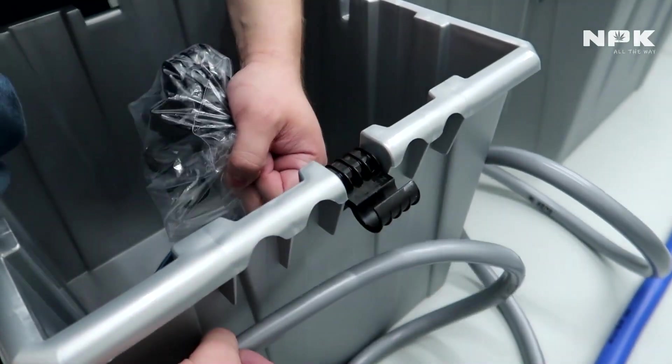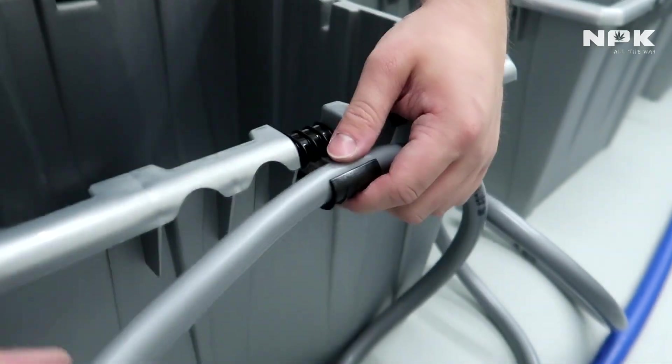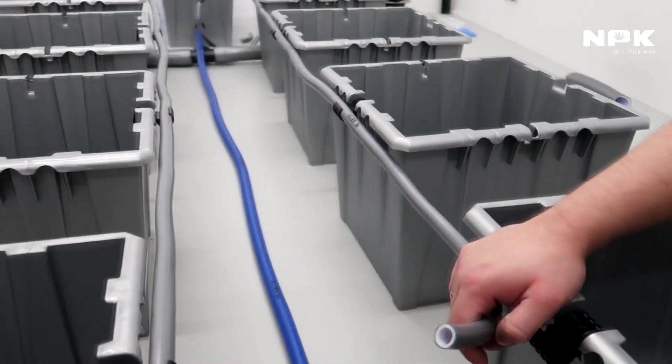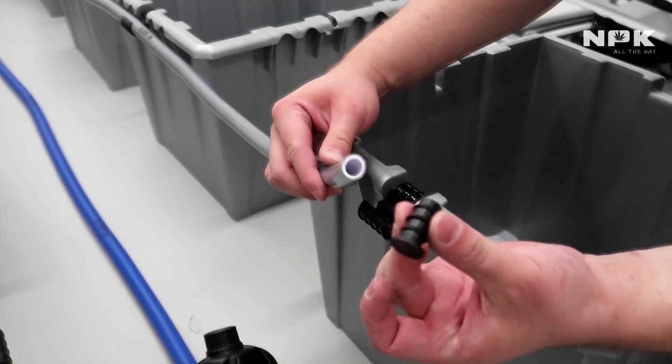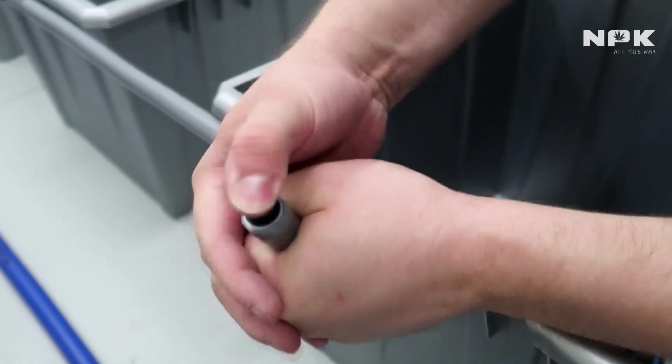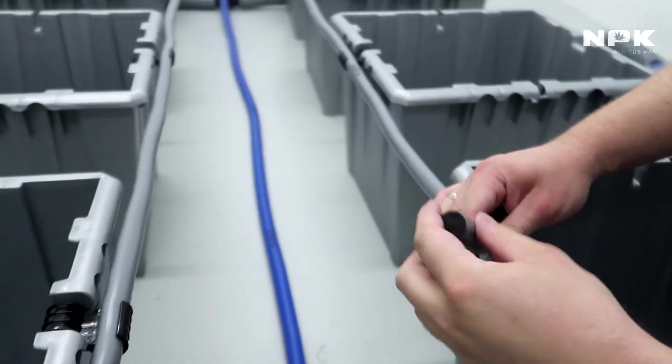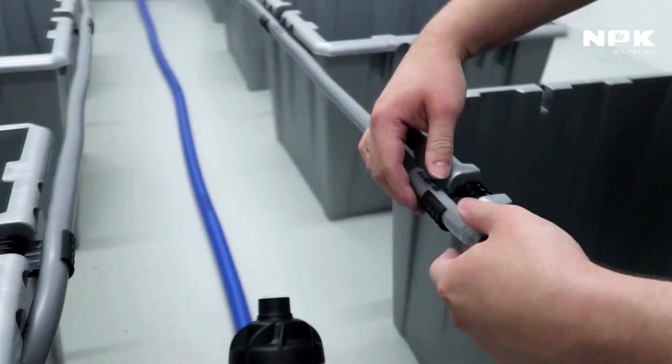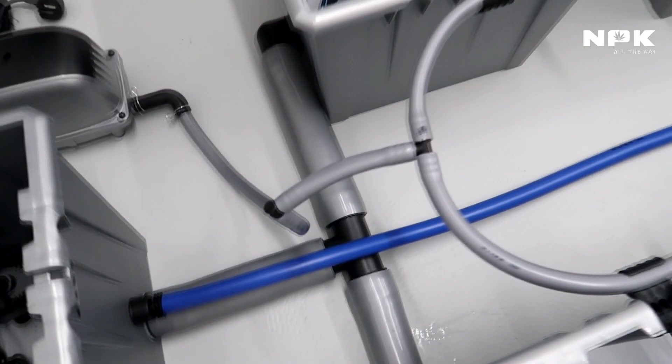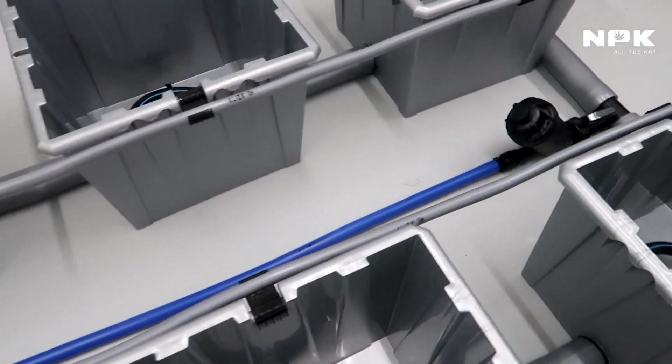Next up we take our clamps that got delivered with the system. Make sure that you put them in the right way. These will hold the line straight along the buckets, pretty neat, looks very clean and it's very convenient. This is how it looks once they're all there. At the end we will have an open hole which we don't want.